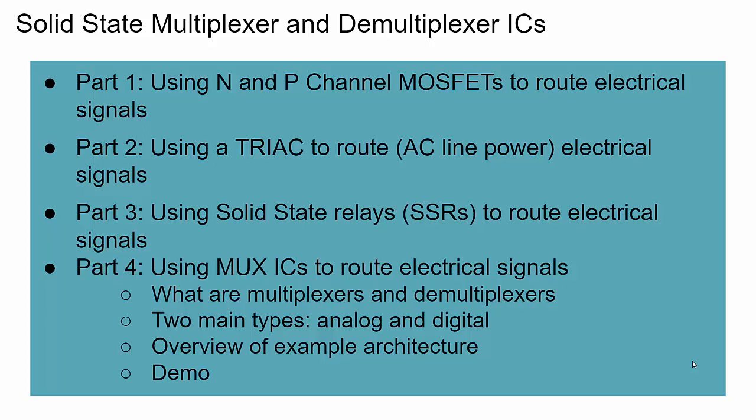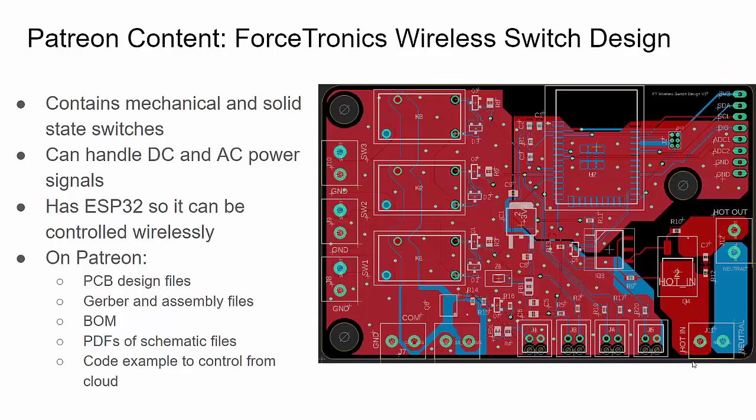We'll talk about what multiplexers and demultiplexers are. We'll talk about the two main types — analog and digital. We'll also do an overview of example architecture, and I am expecting the watcher to have a basic knowledge of digital logic gates and MOSFETs, though that's not required. Then I'll finish with a demo. For Patreon I'm going to do a longer demo with more circuit implementation information, and I also have the Forstronics wireless switch design which corresponds to this switching series.